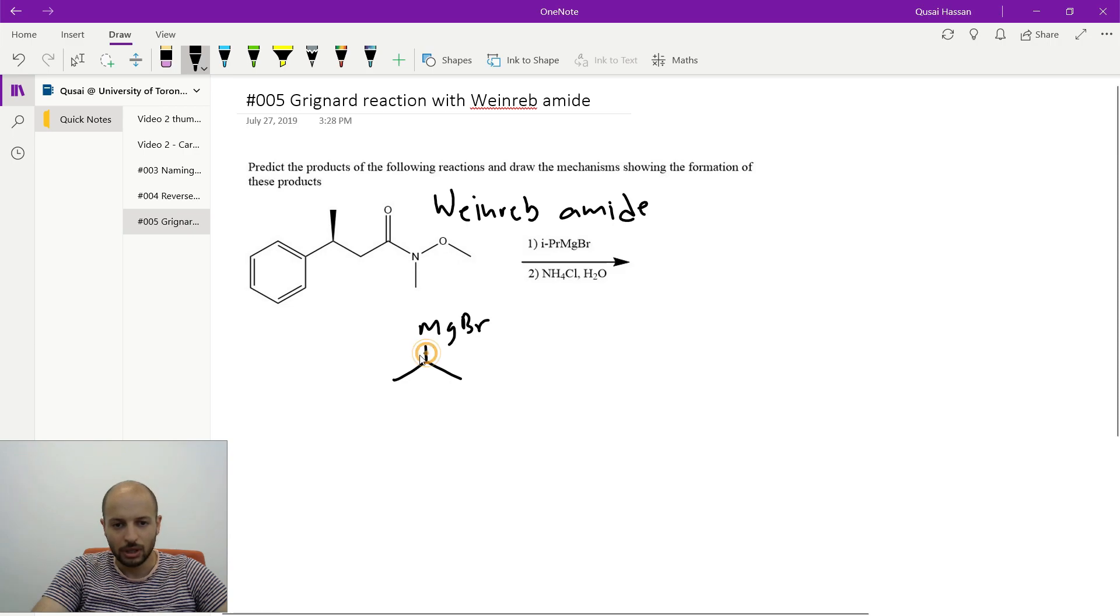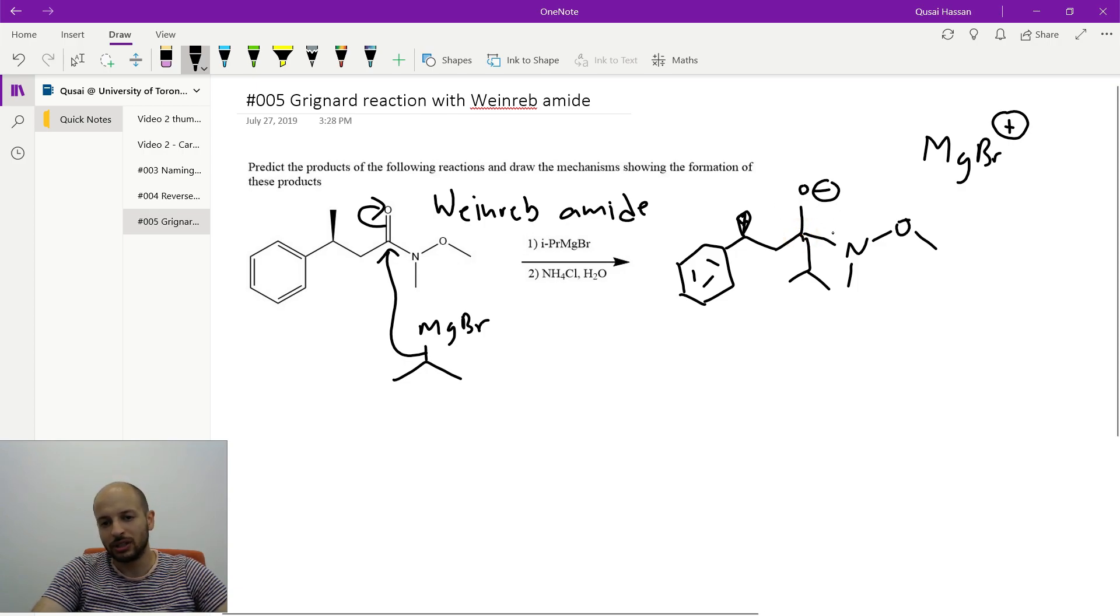And what's going to happen is these electrons here are going to attack the carbonyl, and the electrons in the pi bond are going to go to the oxygen. So what you end up with now is something like this. Now, the other thing to note is that this methyl is pointing out of the page, and so you want to be careful of the orientation of that chiral center in your end product. So you have this Weinreb amide here, and then you have your isopropyl. Well, what do you still have here? You still have your magnesium bromide, and now it has an overall positive charge.